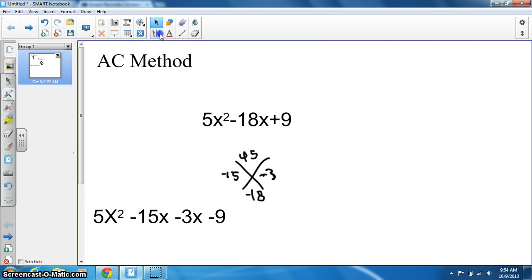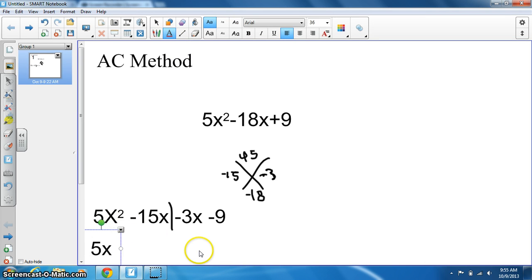Again, factor by grouping. Split this in half and take the greatest common factor out of each. The first part's greatest common factor is 5x, leaving us with 5x(x - 3). For the next equation, we take out negative 3.